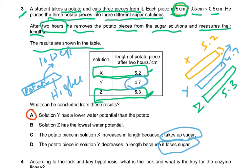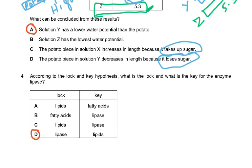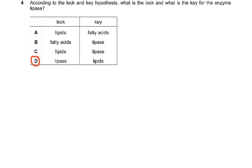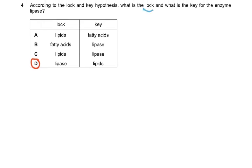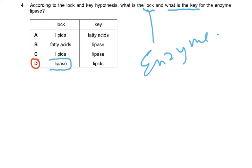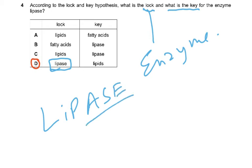Question number 4: according to the lock and key hypothesis, what is the lock and what is the key? The lock is always the enzyme. Here there's only one enzyme — you can tell by the name: L-I-P-A-S-E. Whenever there is that '-ase' suffix, it's an enzyme — protease, lipase, amylase.